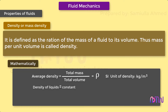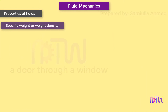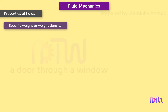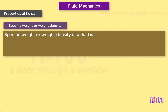The unit of density in SI units is kilograms per cubic meter. The density of liquids may be considered as constant, but the density of gases changes with the change in pressure and temperature. The value of density of water is 1000 kilograms per meter cube.